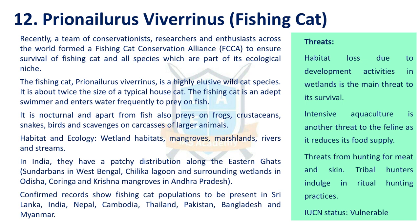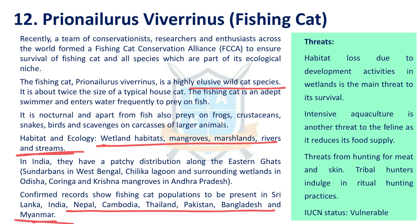The next issue is the fishing cat. The population of fishing cats is declining, according to a recent report. The fishing cat is a highly elusive wild cat species found generally in wetland habitats, mangroves, and marshy lands. In India, fishing cats are found along the Eastern Ghats. There are confirmed records of fishing cat populations in Sri Lanka, Nepal, India, Cambodia, Pakistan, Bangladesh, and Myanmar. Threats include habitat loss, intensive aquaculture leading to loss of food, hunting for meat and skin, and tribal hunting. The fishing cat is in the vulnerable status on the IUCN Red List.